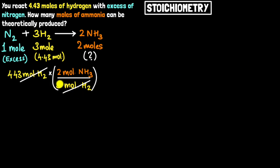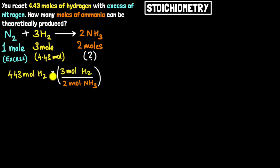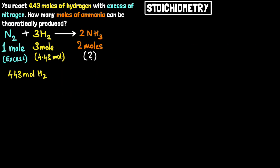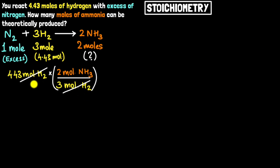The key thing is to write the full units — not just 'moles,' but also which molecule we're dealing with. For example, if I wrote the conversion factor incorrectly as 3 moles of hydrogen over 2 moles of ammonia, I'd notice that moles of hydrogen appear in both the numerator — they're not canceling out. That tells me the hydrogen should be in the denominator and ammonia in the numerator. This is called dimensional analysis, and it's a powerful tool to get our stoichiometry right.